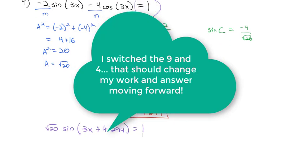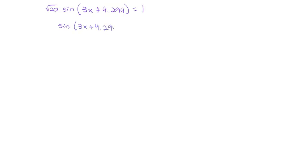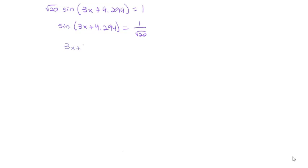Now we can solve this equation because we've gone from something with both sine and cosine to an equation with just sine. Getting sine alone: sin(3x + 4.294) = 1/√20. Using the calculator, sin⁻¹(1/√20) gives an angle of approximately 0.226.